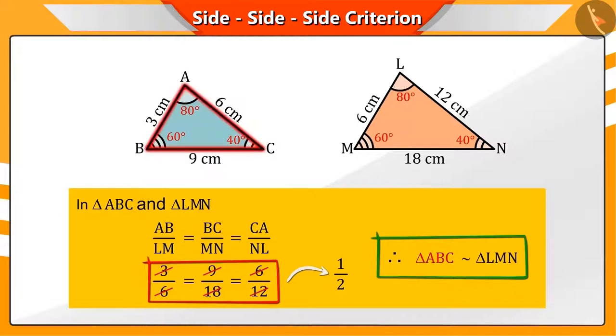By this, we can see that triangles ABC and LMN are similar to each other.